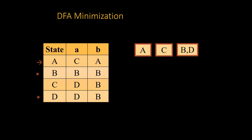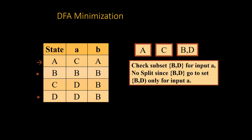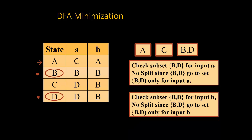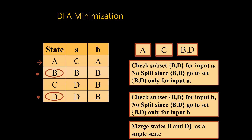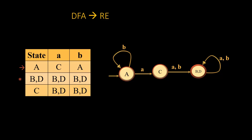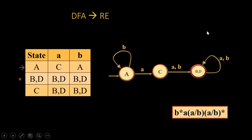We have sets {A}, {C}, and {B, D}. We check whether {B, D} can be merged as a single state. On input A, {B, D} goes to {B, D} itself; on input B it also stays within this set. So we can comfortably merge B and D as a single state — this is our minimized DFA. The corresponding regular expression is B* A (A | B A | B)*, representing the language of the NFA. The steps were: convert NFA to DFA, minimize the DFA, then generate the regular expression.